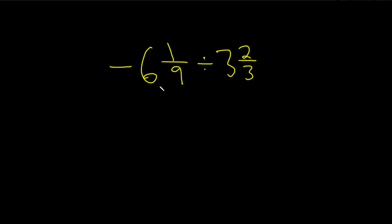So we have a negative mixed number divided by a positive mixed number. The first step is going to be to write both mixed numbers as improper fractions. So here's how you do it.